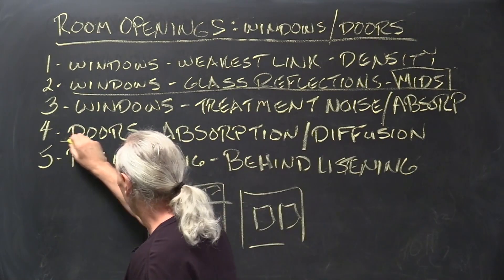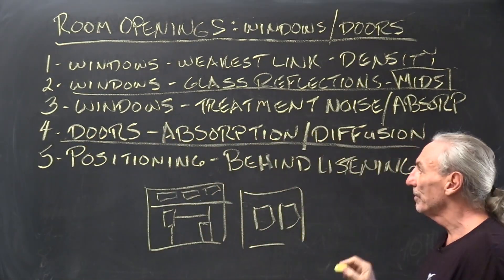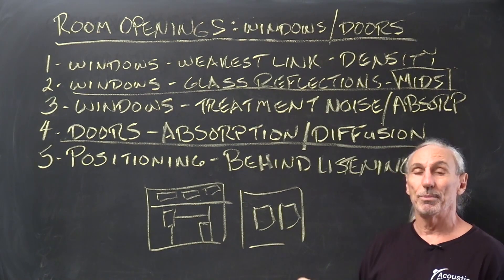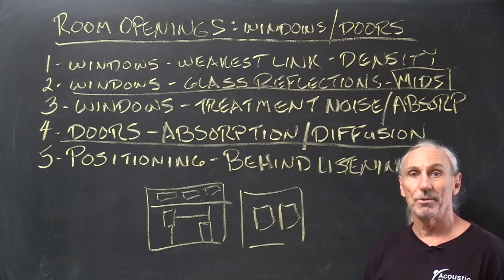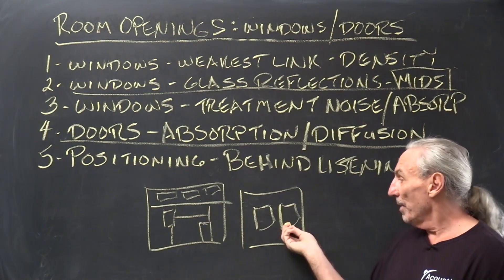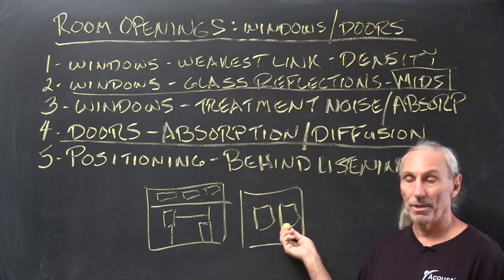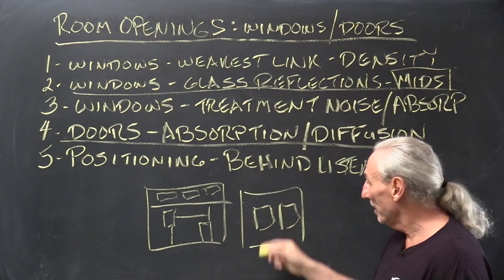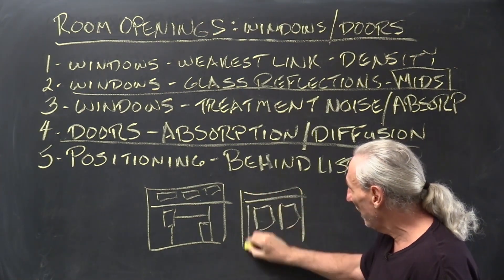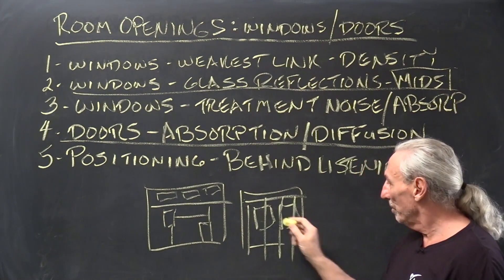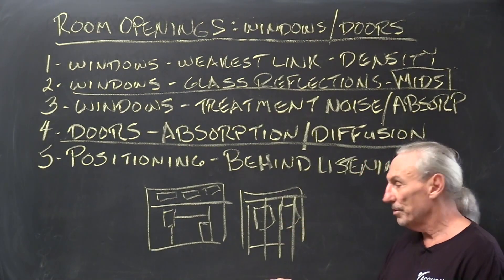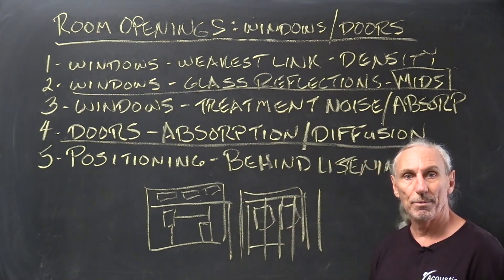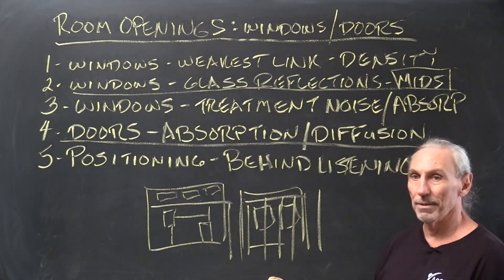Doors we have to have, obviously, to get in and out of the room. We can treat doors using absorption and diffusion — we hang diffusion on doors all the time, and we hang absorption on doors and windows. But you've got to be willing to make the sacrifice. On windows, we have a sliding foam panel system — a series of panels that you move back and forth over the windows. When you're not using them, you move them to the side. When you are, you put them over the windows.